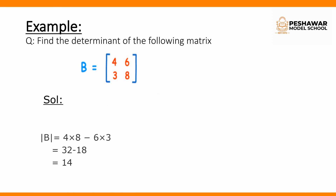We can further explain with an example. We have a matrix B whose order is 2 by 2, meaning it is a square matrix. We find the determinant by cross-multiplying the diagonal elements with a negative sign in between. We multiply 4 with 8 and 6 with 3: 4×8 = 32 and 6×3 = 18, so 32 minus 18 equals 14. That is the determinant of matrix B.